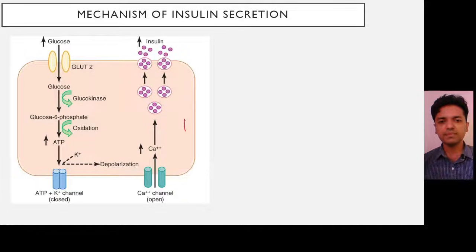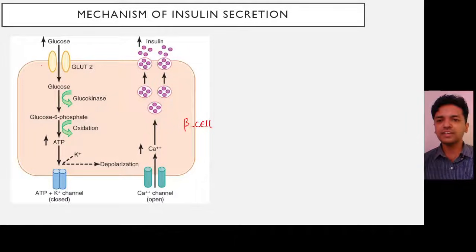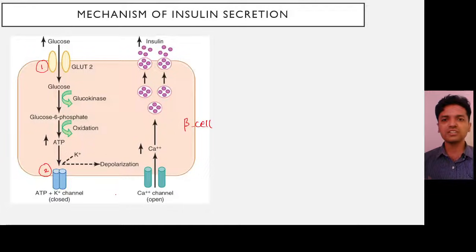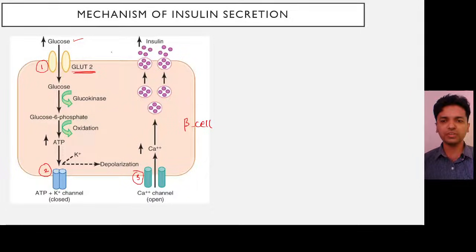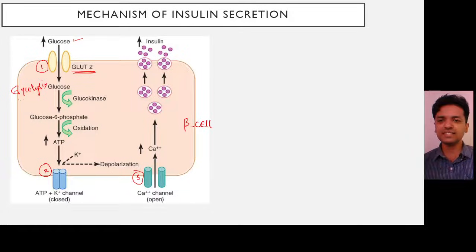The cell shown on the slide is the beta cell with its three channels: GLUT2, the ATP-sensitive potassium channel, and the voltage-sensitive calcium channel. Whenever a person takes food, blood glucose concentration increases. This glucose enters the beta cell via GLUT2. Once inside, glucose undergoes glycolysis — glucokinase is the most important enzyme — and glycolysis ultimately yields ATP.